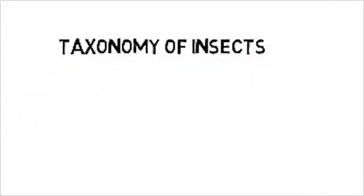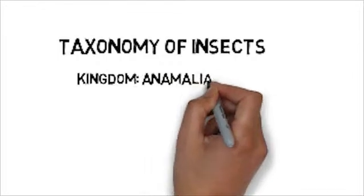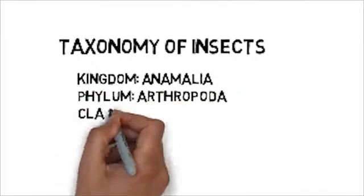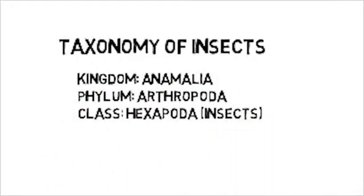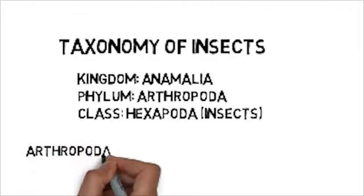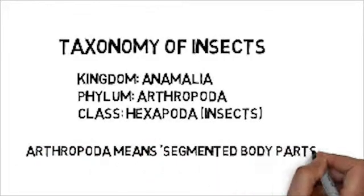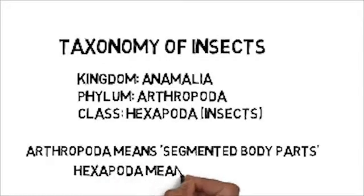All insects are part of the animal kingdom, which is further divided into phyla. Insects are in the phyla arthropoda, and their class is hexapoda. Arthropoda means segmented body parts, and hexapoda means to have six legs.